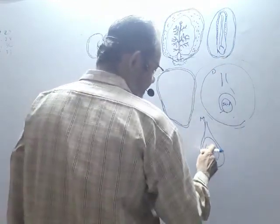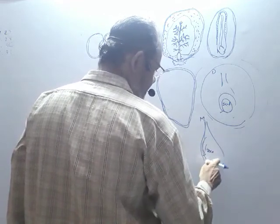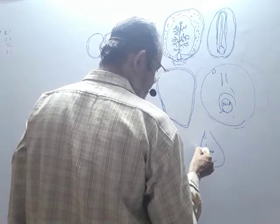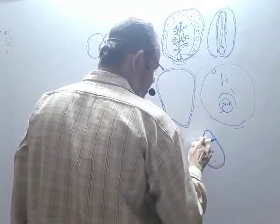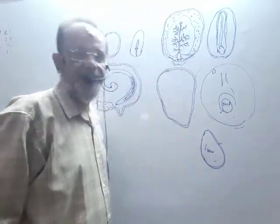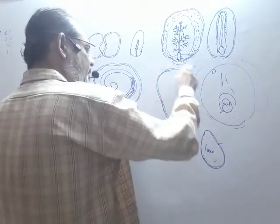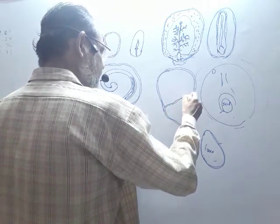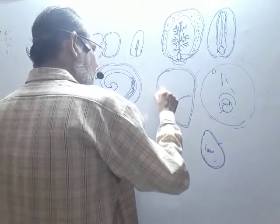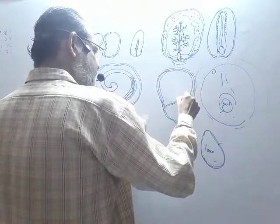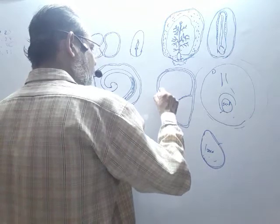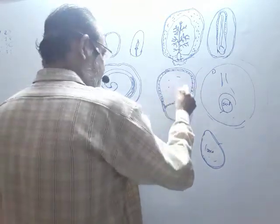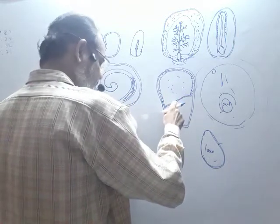In monocotyledon, the ovule does not increase in size. So the seed covering and the fruit covering are the same — they are common. The upper part is filled with reserve food material. All the walls have specialized cells. These cells are filled with protein molecules — protein particles. This layer is called the aleurone layer. This is starch — endospermic starch. Aleurone means proteinaceous.